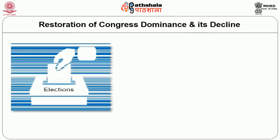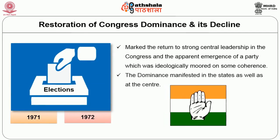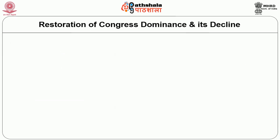After the 1971 Lok Sabha elections and 1972 state-level elections, Congress dominance was re-established and there was a decline of coalitional government. With the coming to power of Indira Gandhi, her centralized leadership style did not allow the possibility of any coalitional arrangement, and her populist politics ensured Congress came to power not only at the center but also at the state level.